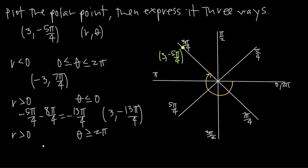The last way: r must be positive and theta must be greater than or equal to 2 pi. With r positive, we go out 3 units in the second quadrant — so we already know r = positive 3. For theta, starting at 0 and going one full positive rotation to 2 pi (or 8 pi over 4), then continuing: 9 pi over 4, 10 pi over 4, 11 pi over 4 gets us back to this spot. So the point is (3, 11 pi over 4), which is also the same point in coordinate space as the other three representations.